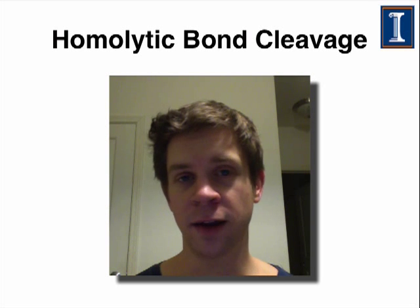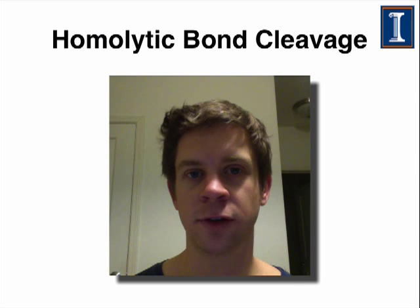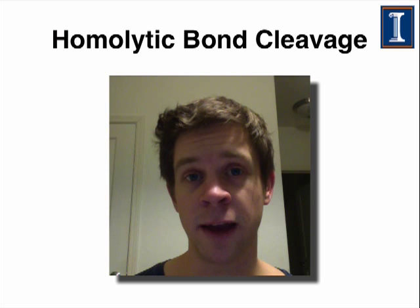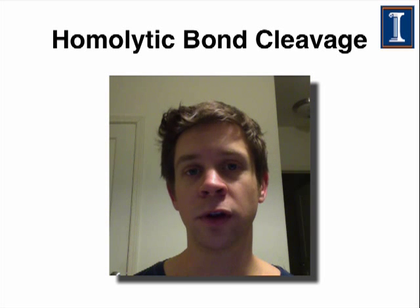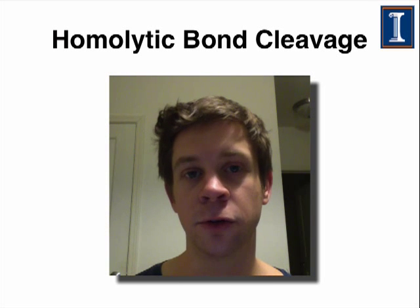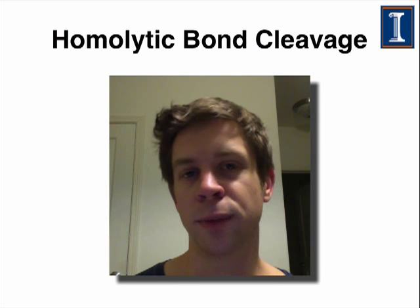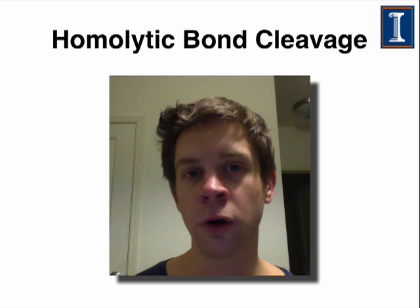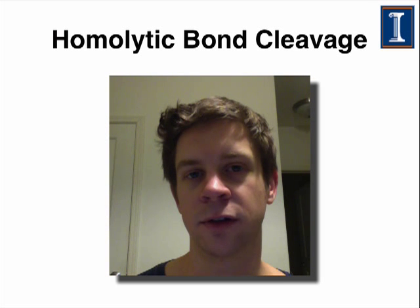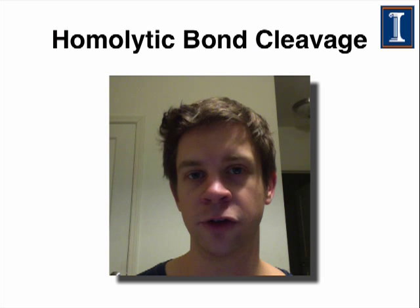Most stable organic compounds have an even number of electrons. This means that the vast majority of radical reactions begin with the cleavage of a two-electron bond to form two radicals. This is called homolytic bond cleavage, and the propensity of a particular bond to undergo homolytic bond cleavage is related to its bond dissociation energy.